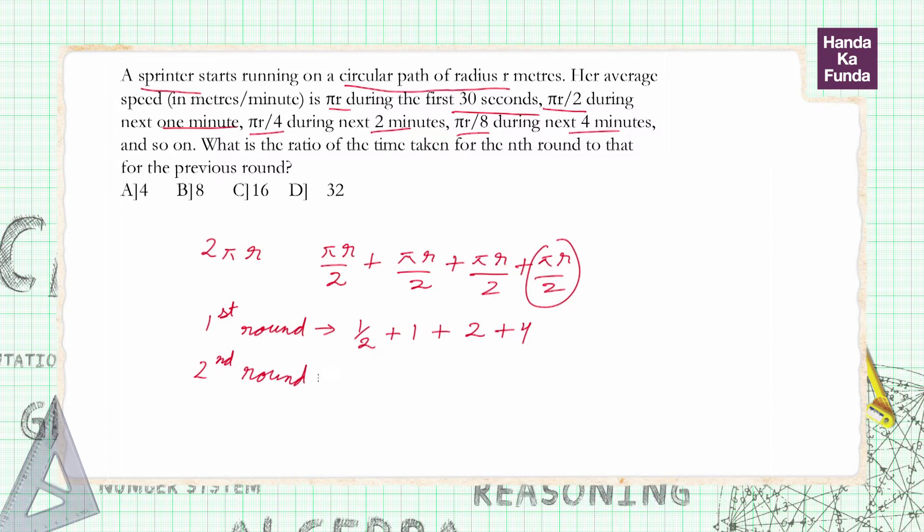Then 32, then 64. What will happen in the third round?